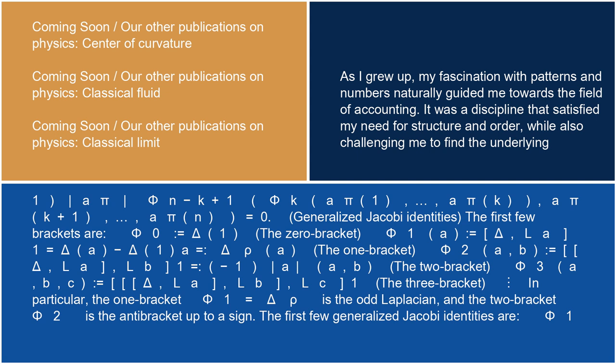The first few brackets are: phi_0 equals delta(1) (the 0-bracket); phi_1(a) equals delta(L_a · 1) equals delta(a) minus delta(1) equals delta_rho(a) (the 1-bracket); phi_2(a,b) equals delta·[L_a, L_b]·1 equals minus (minus 1)^|a| · (a,b) (the 2-bracket); phi_3(a,b,c) equals delta·[L_a,[L_b,L_c]]·1 (the 3-bracket). In particular, the 1-bracket phi_1 equals delta_rho is the odd Laplacian and the 2-bracket phi_2 is the antibracket up to a sign.